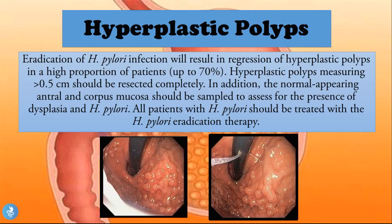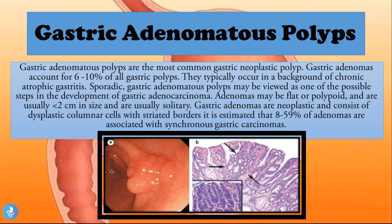Eradication of H. pylori infection will result in the regression of hyperplastic polyps in about 70% of patients. Hyperplastic polyps measuring more than 0.5 centimeters should be resected completely, and the normal-appearing antral and corpus mucosa should be sampled to assess for dysplasia and H. pylori. All patients with H. pylori should be treated with eradication therapy.